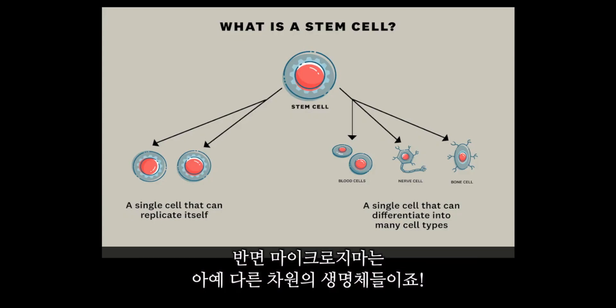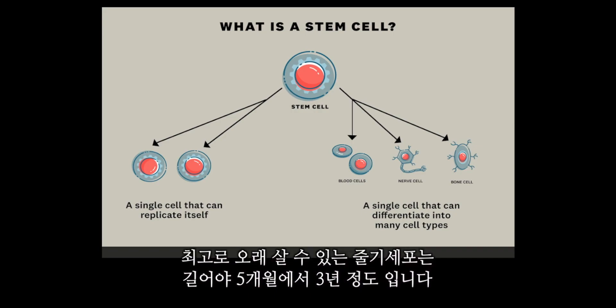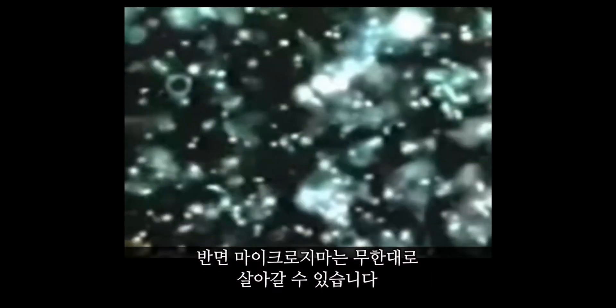A microcymas is a whole other entity altogether. The longest living stem cells live between 5 months to 3 years before dying out. Microcymas live on forever. Microcymas has never been observed to perish. They are immortal as far as can be estimated. They are like the undying cosmic dust of our world.